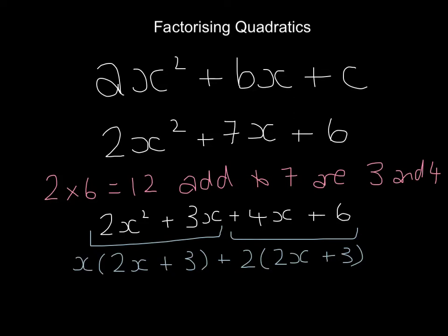We can then take out both of these as a common factor. If I take out a common factor of 2x + 3 from both terms, I'm left with x from the first term and plus 2 from the second. So it's (2x + 3)(x + 2), and that's our term factorized.